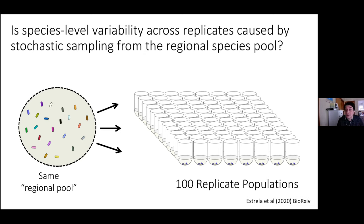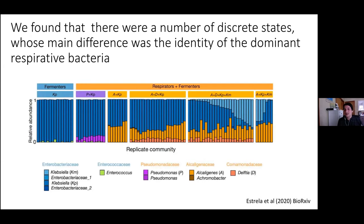To nail down that question, Sylvia carried out an experiment repeating what we described before but with much larger replication. From the same regional species pool, she inoculated 100 replicate populations — 100 identical habitats, same glucose M9 medium — and propagated these communities for 18 transfers.